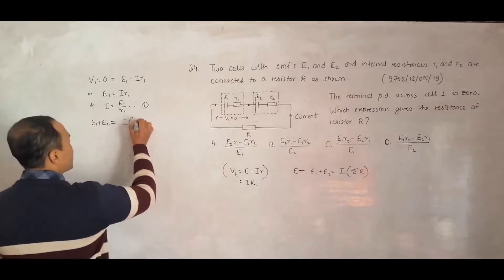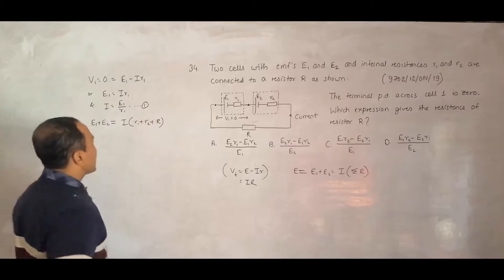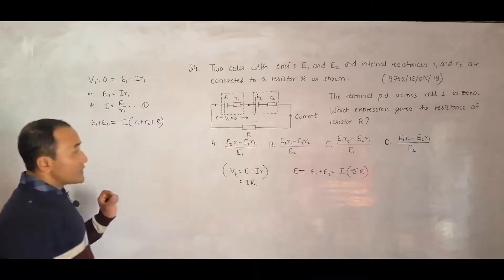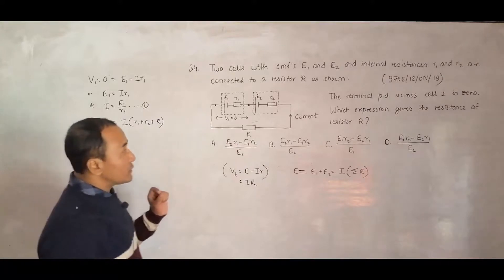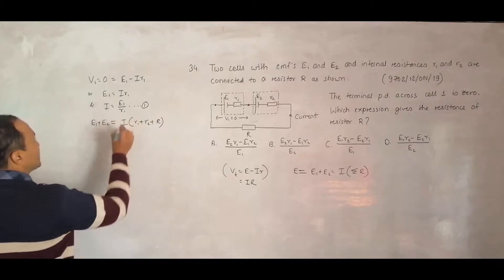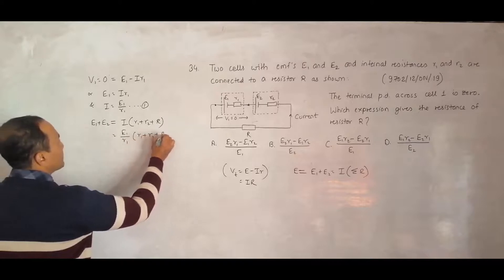That is why they are in series. The total is R1 plus R2 plus R. I into R1 plus R2 plus this R. Now, what you have to do is find the value for this R. Let me use I equal to E1 by R1, then R1 plus R2 plus big R.